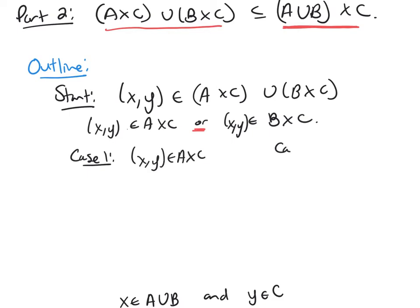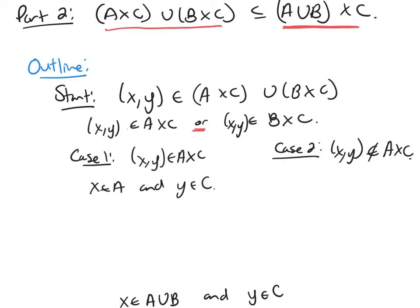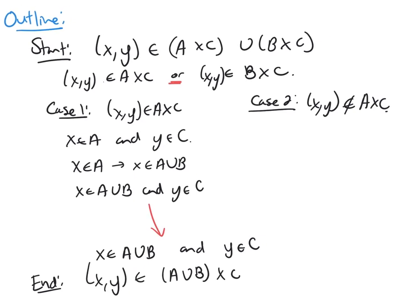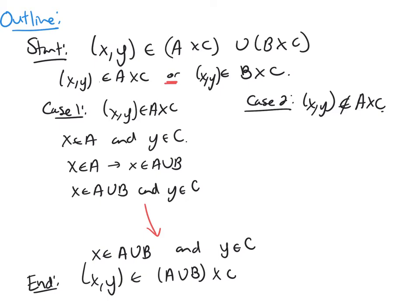That's my first case. And my second case will be that it's not in A cross C. So in Case 1, this means x is in A and y is in C. But if x is in A, then x is in A union B. So now I have that x is in A union B and y is in C, which is exactly what I needed to get to.